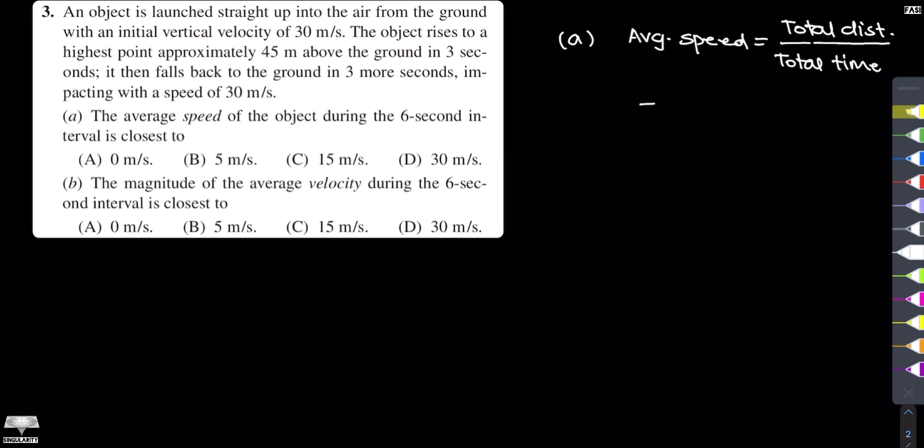We can see that the total distance covered is 45 meters going up and 45 meters coming down. So the total distance is 45 plus 45, which is 90 meters. The total time is 3 seconds up plus 3 seconds down, which is 6 seconds. So 90 divided by 6 which is 15 meters per second. This means that the average speed is 15 meters per second, which is option C in the first part of the problem.